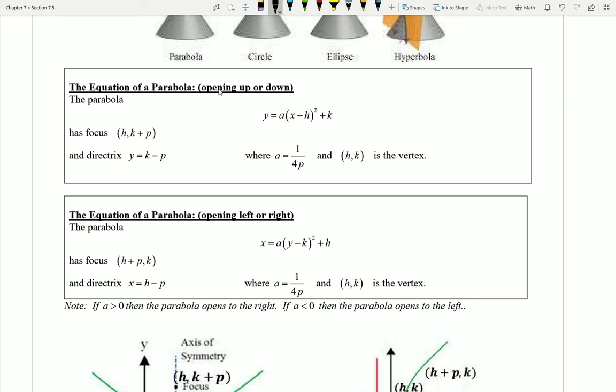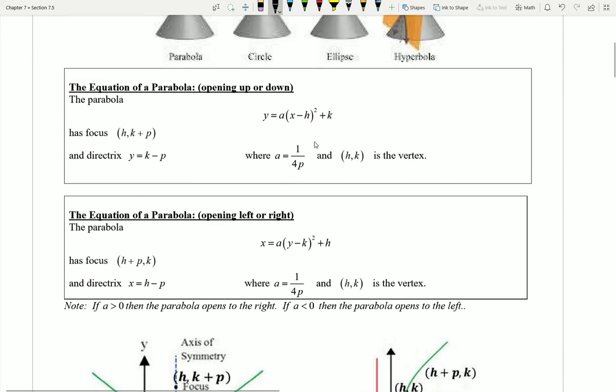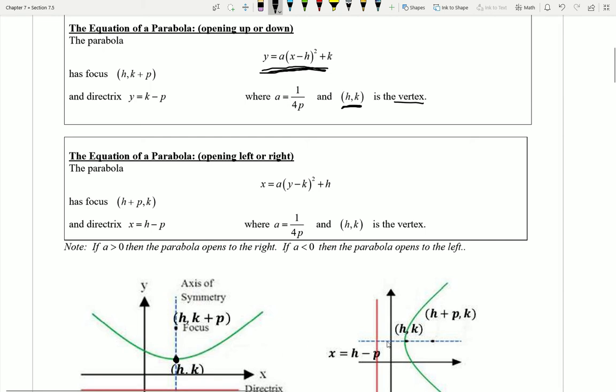We know that parabolas can open up or down, but they could also open left or right, and you can see down here I have some pictures of this. I have my green parabola opening up, over here I have a green parabola opening to the right. If I have a parabola that's opening up or down, this is typically a formula that I can use: a(x - h)² + k, and this value of h and k are important because that tells me where the vertex of that parabola is. That is, it tells me where this lowest or highest point ends up being. If my a value is positive, then I know my parabola opens up. If a is negative, it opens down.